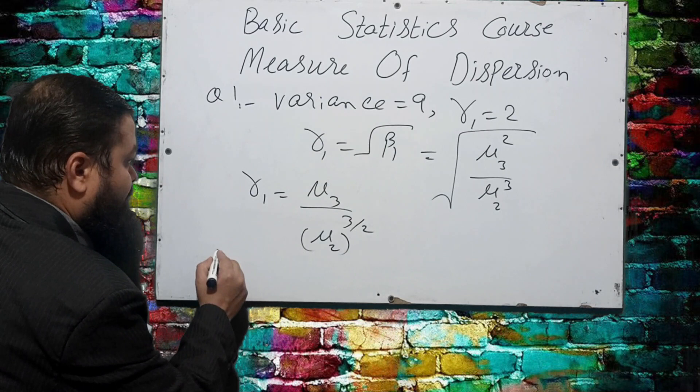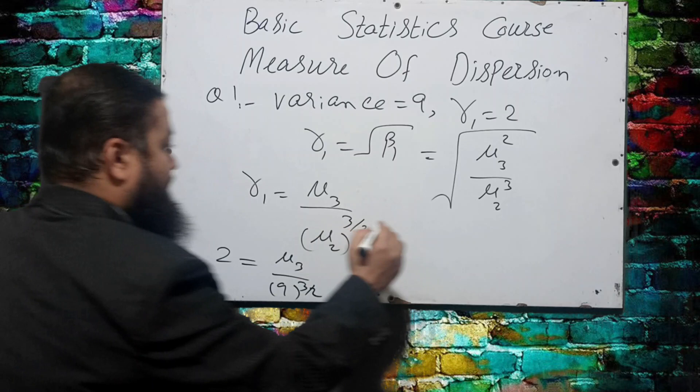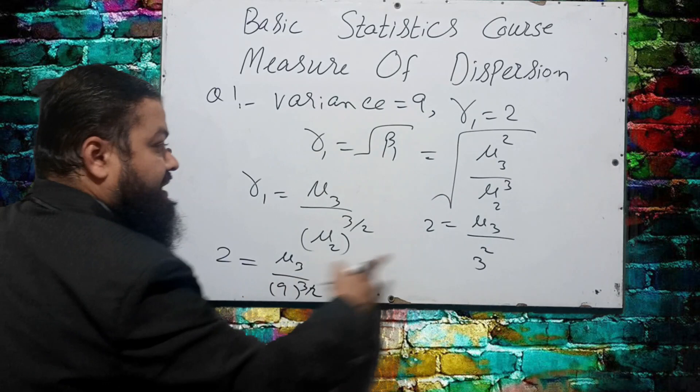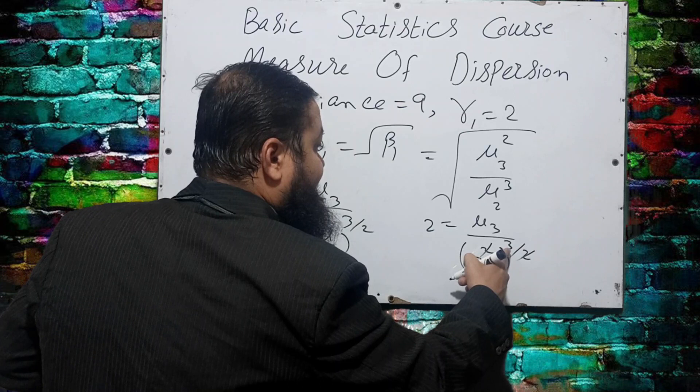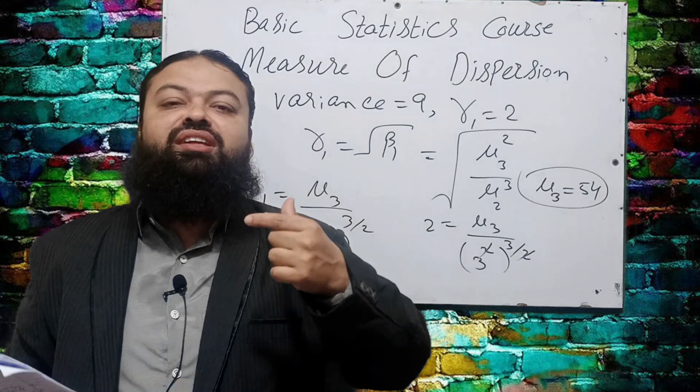γ₁ is given as 2. Substituting: 2 = μ₃ / μ₂^(3/2). We know μ₂ is the variance, which is 9, so 9^(3/2) = (3²)^(3/2) = 3³ = 27. Therefore 2 = μ₃ / 27, which means the third moment about the mean, μ₃, is equal to 54.